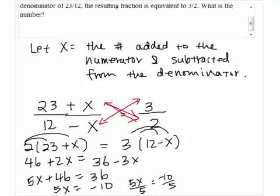Dividing both sides by 5, we get X = -2. So the answer is -2.